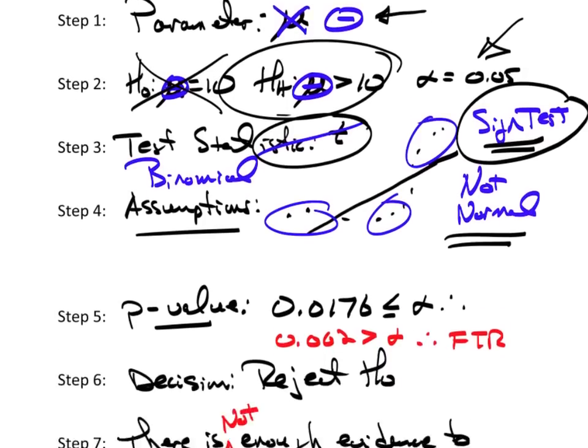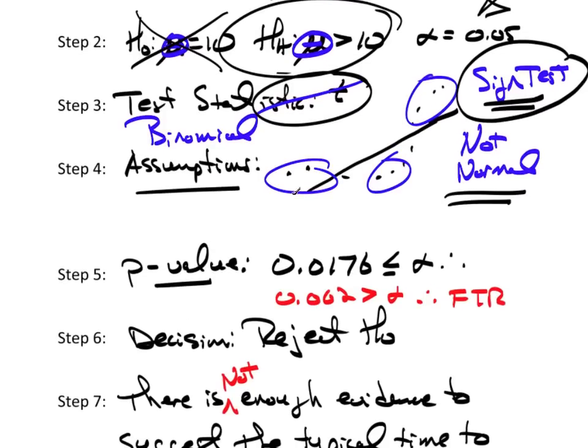And then we continue on and get a p-value. Again, this is based on the sign test. It's a p-value from the sign test. And then we state our decision based on the p-value and state the conclusion.